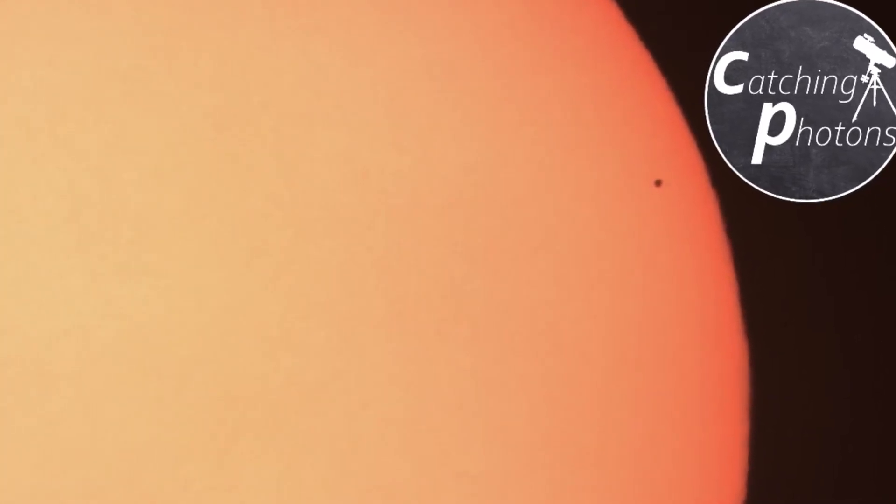Mercury transited the sun's disk in November the 11th and I was lucky enough to capture this event. The clouds just parted and I took some IV files from that little black dot in front of the sun's bright disk. That was fantastic.